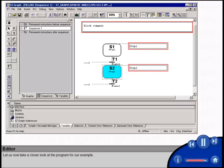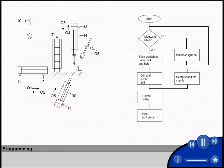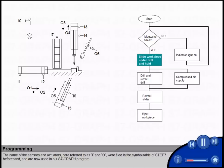Let us now take a closer look at the program for our example. Let us consider the scene in which the workpiece is moved under the drill. The name of the sensors and actuators, here referred to as I and O, were filled in the symbol table of STEP 7 beforehand, and are now used in our S7-GRAPH.